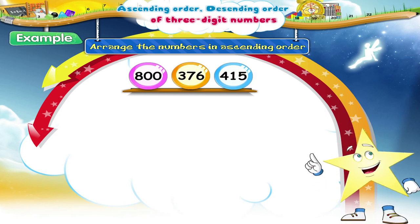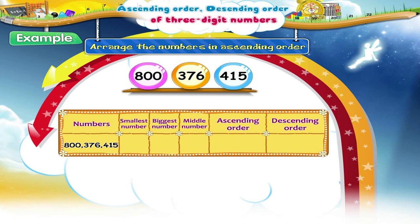Ok, let's do it together. Here, the smallest number is 376 and the biggest number is 800. So the middle number is 415. The ascending order will be 376, 415 and 800.